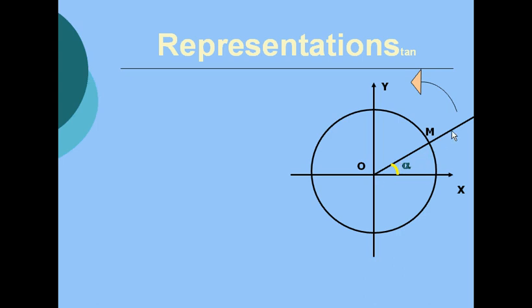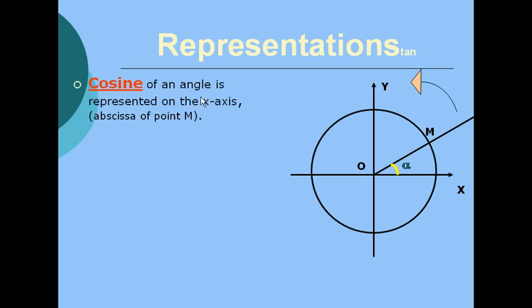We construct angle alpha and elongate its side so that this side meets the trigonometric circle at point M. Cosine of an angle is represented on the x-axis, which is the abscissa of point M. So if we project M onto the x-axis, which is the cosine axis, we get the segment OA as a result.